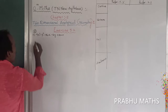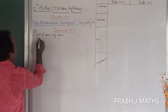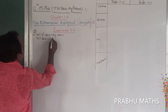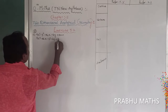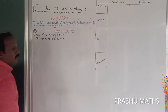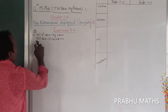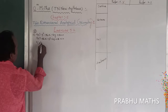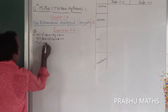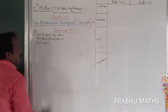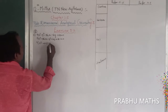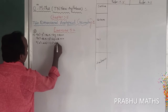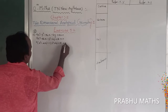First, rearrange the given equation: 9x² minus 36x minus y² minus 6y plus 18 equals 0. This is the first step. Next, take the common value of the first two terms — 9 is common, giving x² minus 4x. For the second two terms, minus 1 is common.